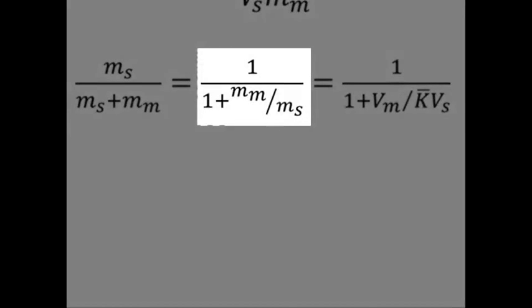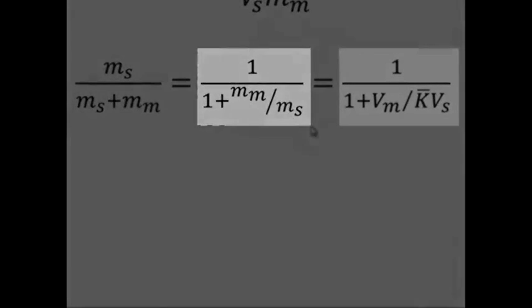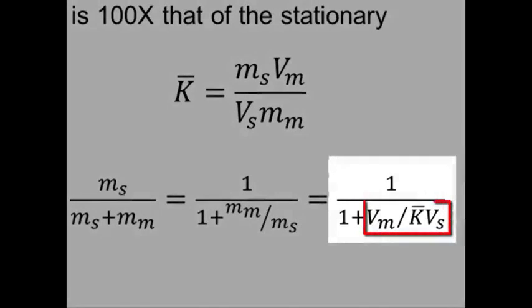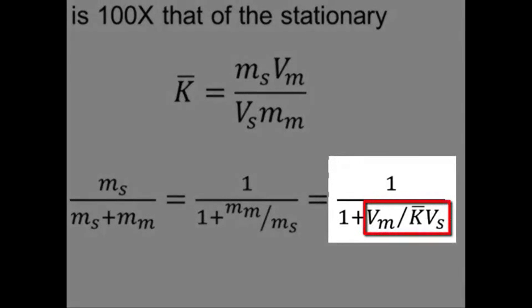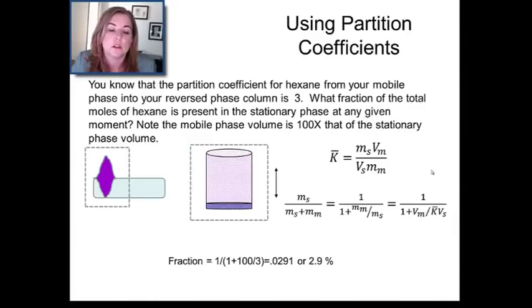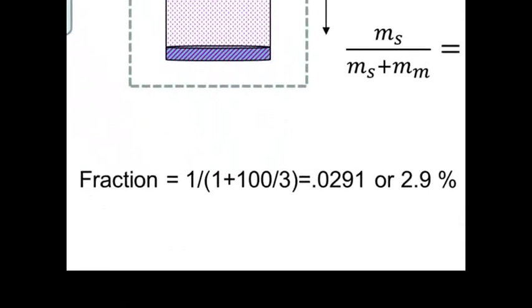So, what I did is I reduce that expression by dividing by m sub s on both the top and the bottom of that equation, and I ended up with m sub m over m sub s, which if you look up here, you can relate it to the partition coefficient pretty easily by just rearranging K bar. And you can basically see that V sub m over K bar V sub s is the same as m sub m over m sub s. Putting all that together, I calculated the fraction of material in this case to be 2.9% in the stationary phase.